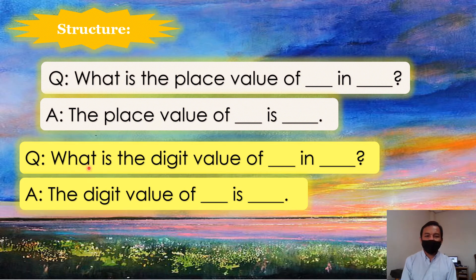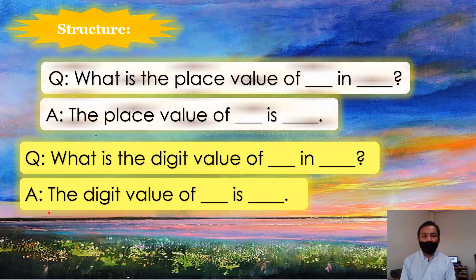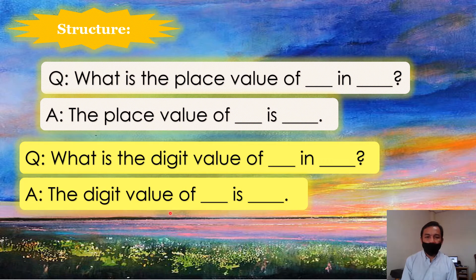What is the place value of blank? What is the digit value of blank in blank? Answer: The digit value of blank is blank. The digit value of blank is blank.